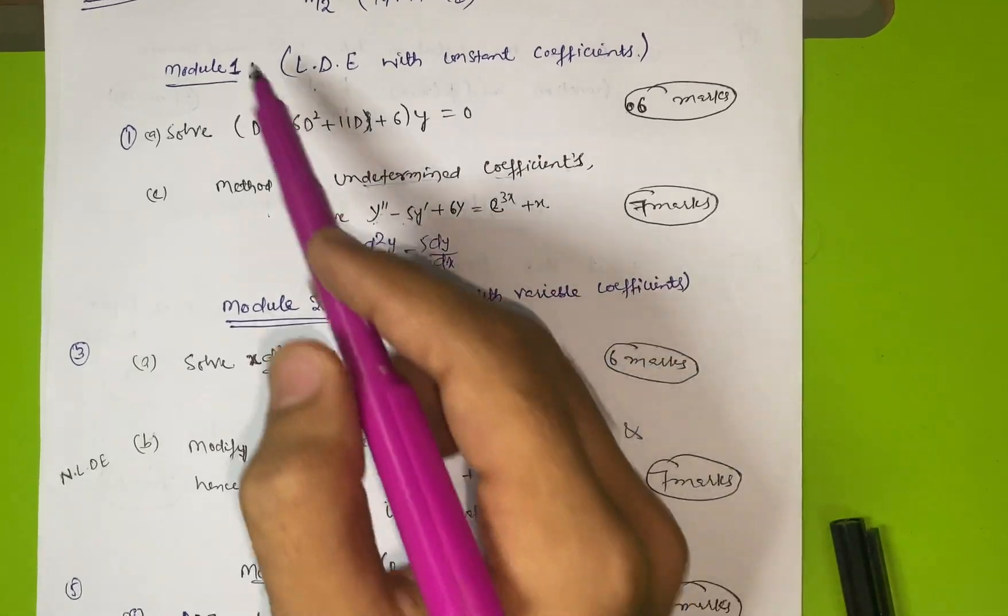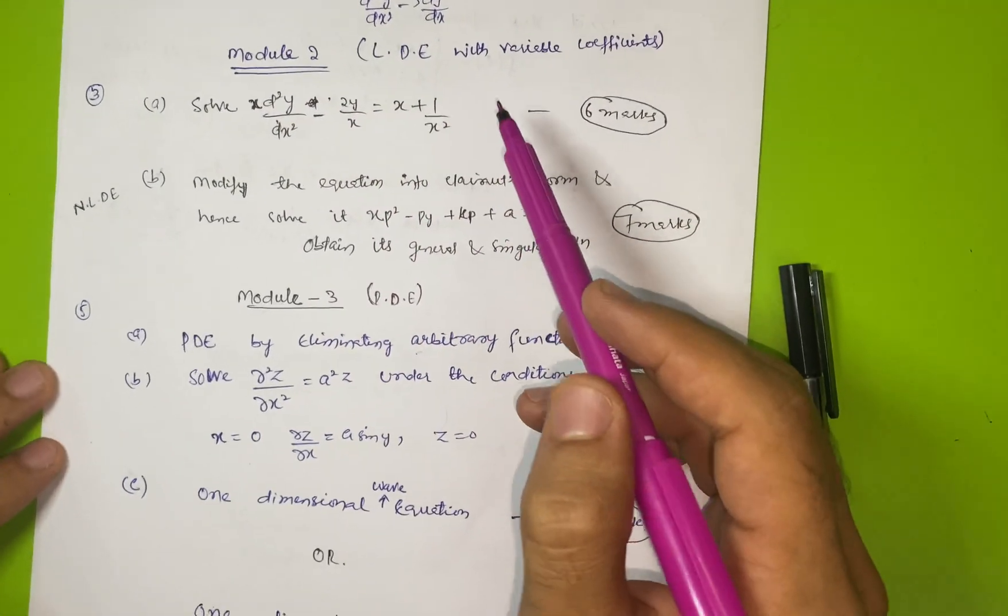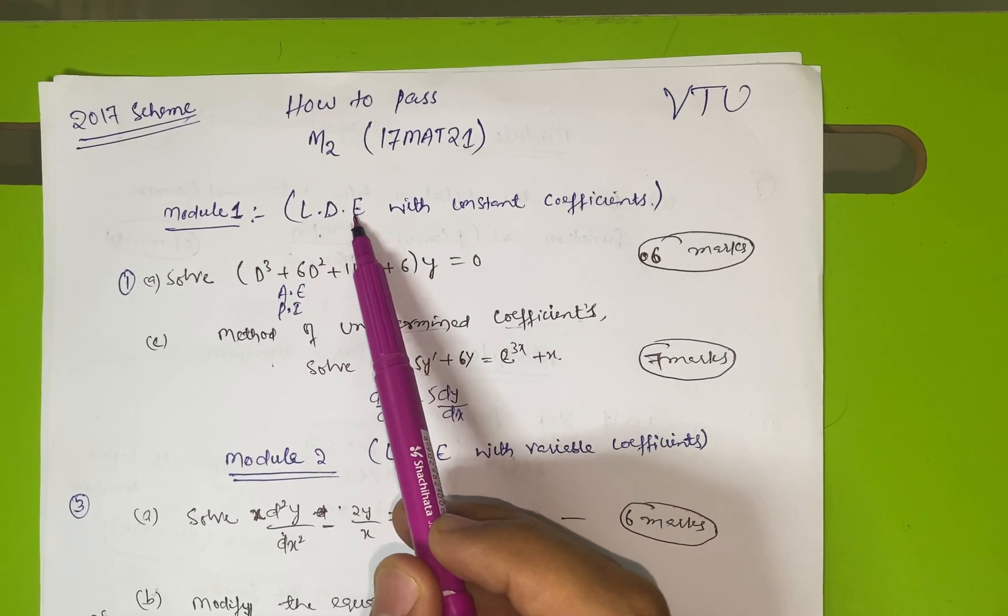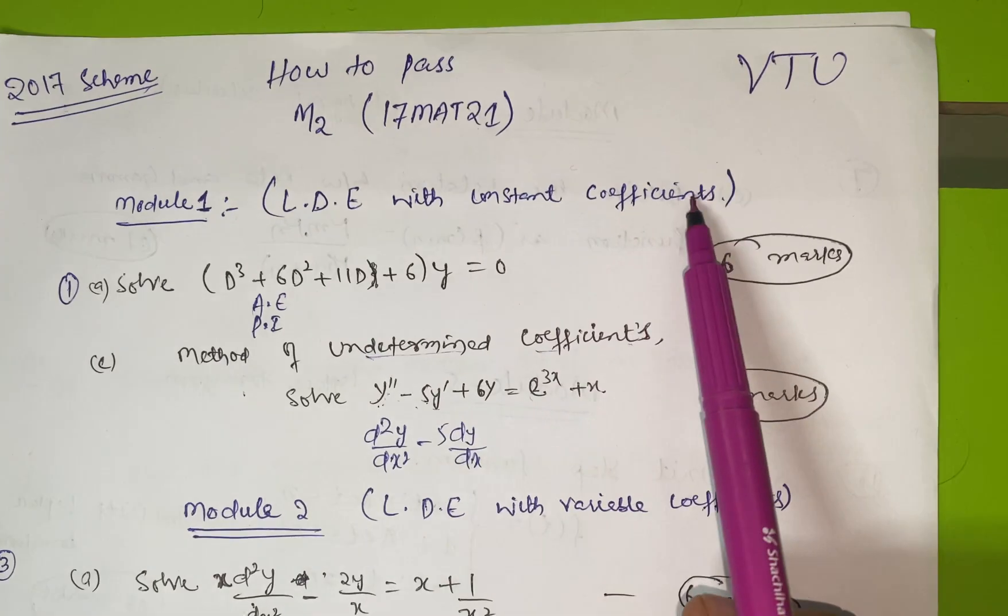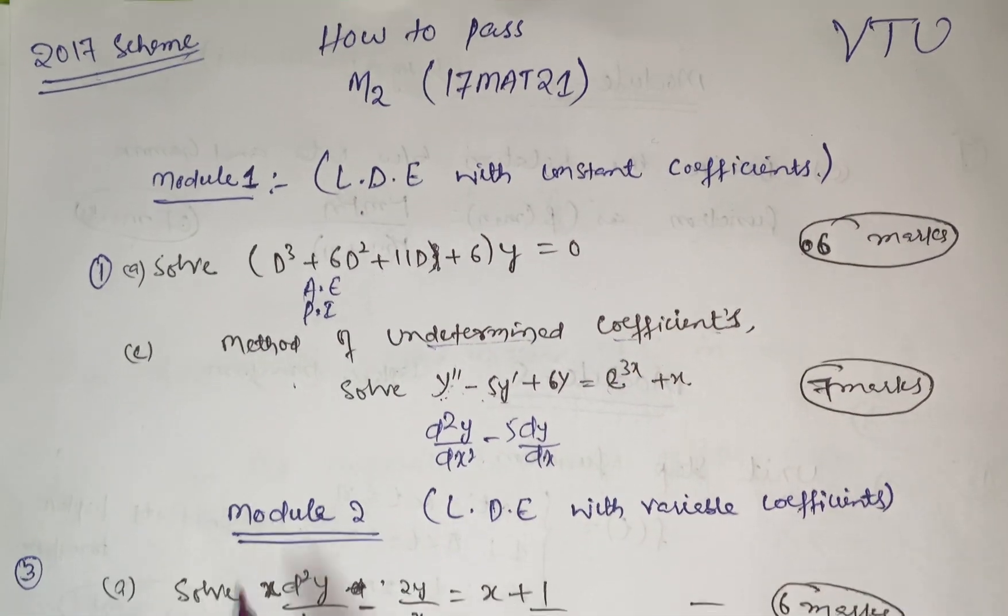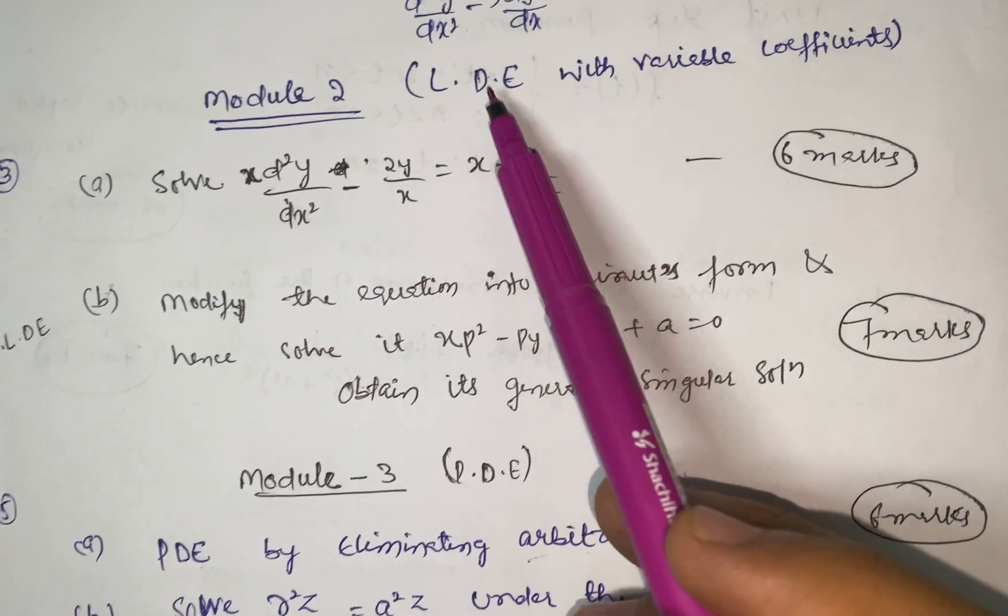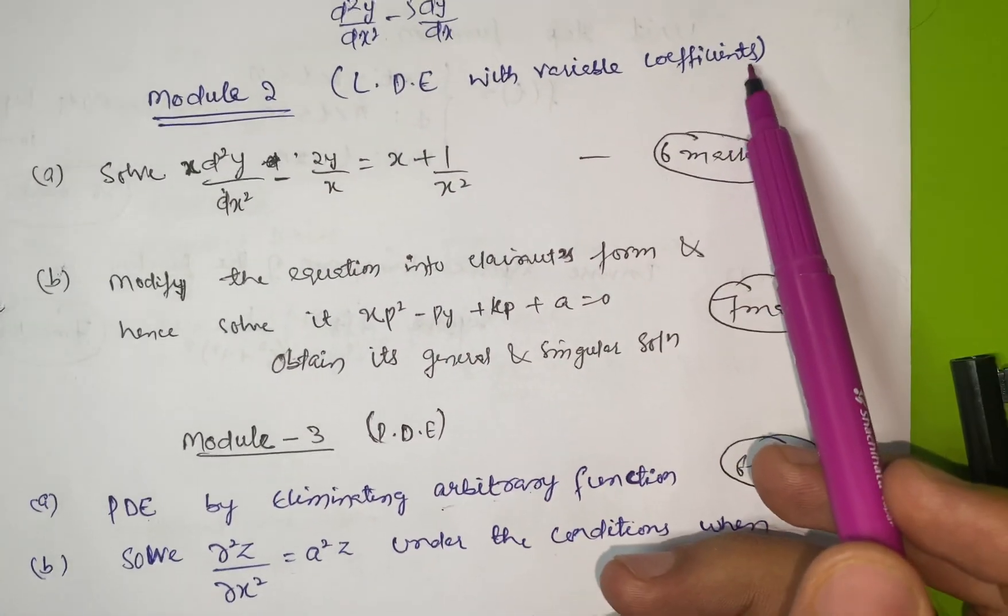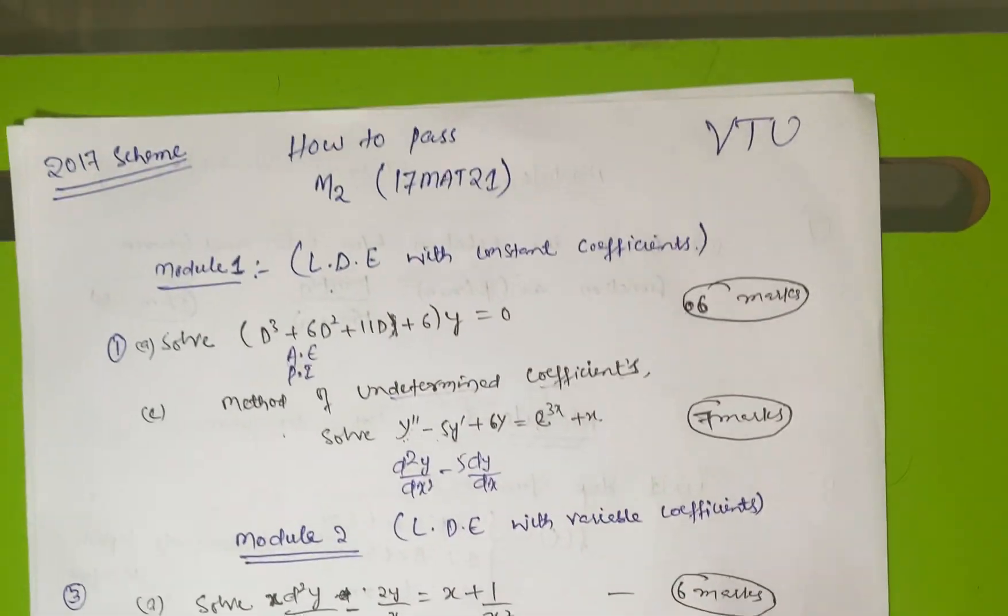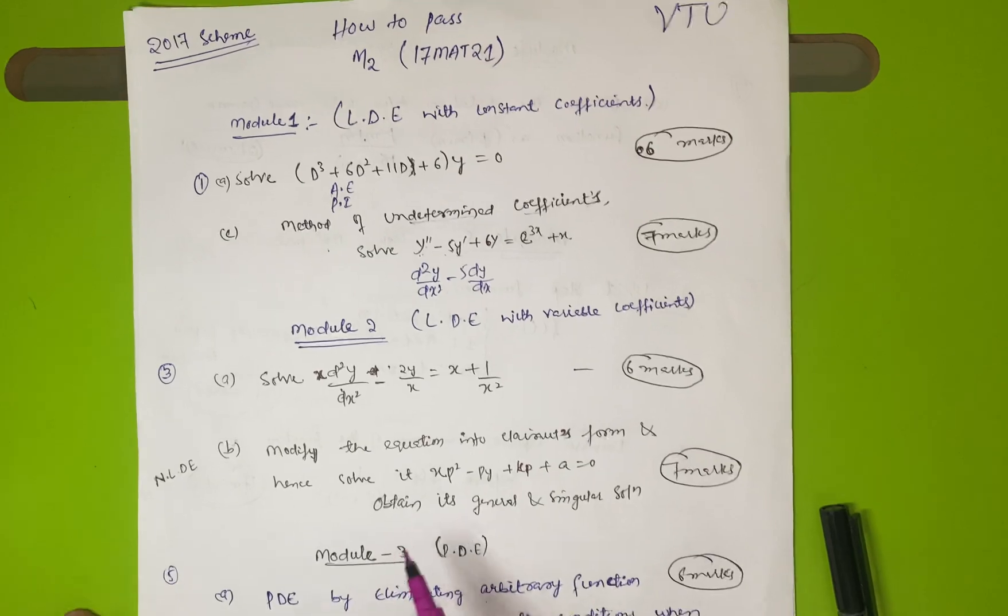Let me tell you, the first three modules are simple, these are PU basic concepts. The first module is Linear Differential Equation with Constant Coefficients, second module is Linear Differential Equation with Variable Coefficients, and Module 3 is Partial Differential Equation.